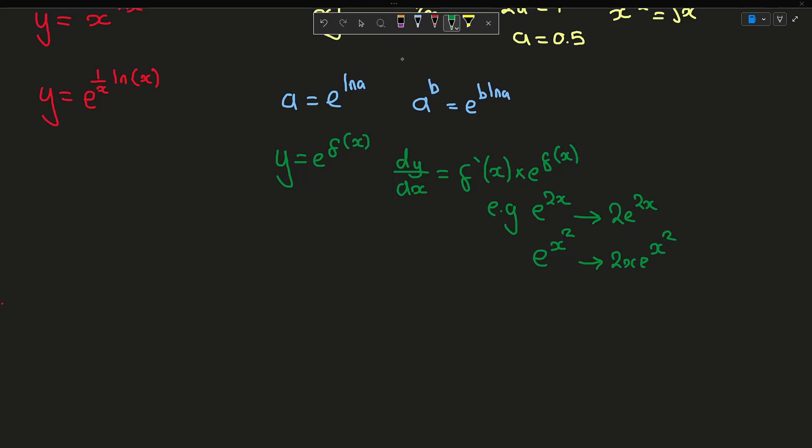All right, so knowing this, what we can do is we can rewrite this and try and find out our derivative. So we have dy by dx is going to be equal to d dx of 1 over x multiplied by natural log of x, and then this is all multiplied by e to the 1 over x ln x. And this can look very difficult to differentiate, but trust me, it's not too bad. And all we need to do to differentiate this is use the product rule.